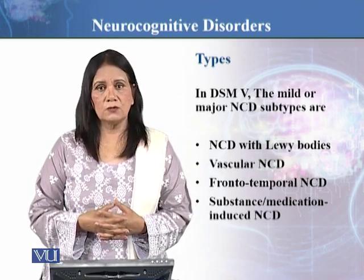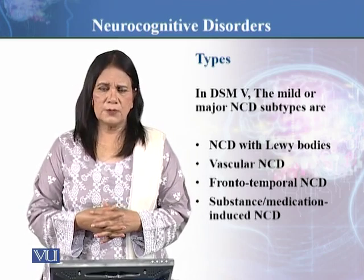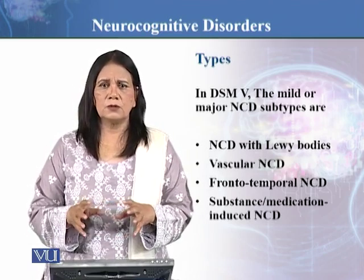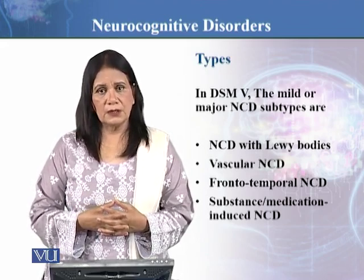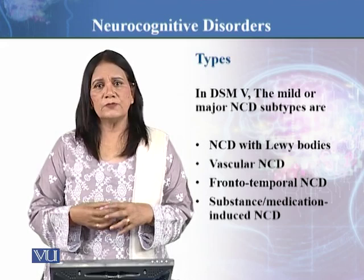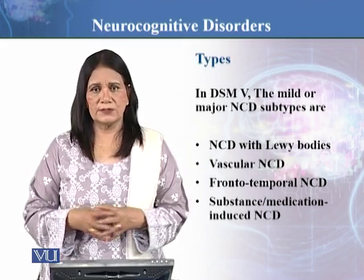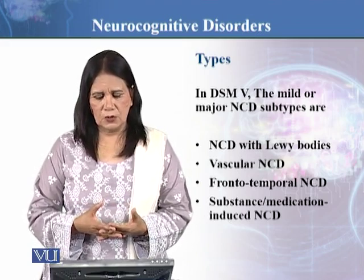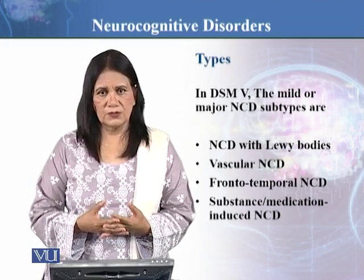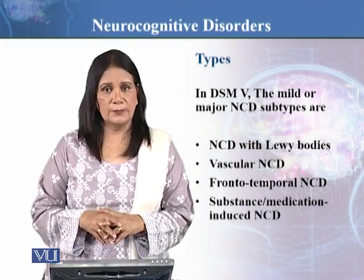The third one is frontotemporal neurocognitive disorders. Any problem or issue — it's quite possible that the brain's degeneration is in the frontal or temporal area. These areas are actually very much related to higher mental processes. So one type is frontotemporal neurocognitive disorder.